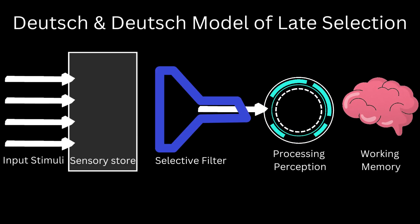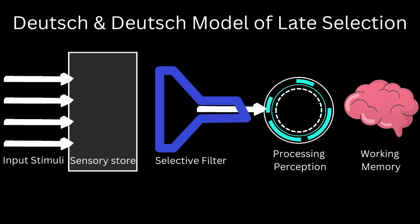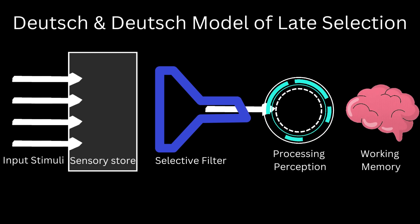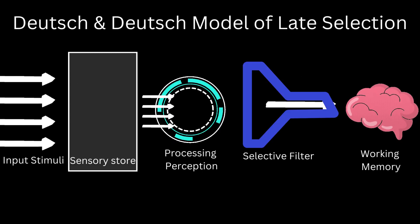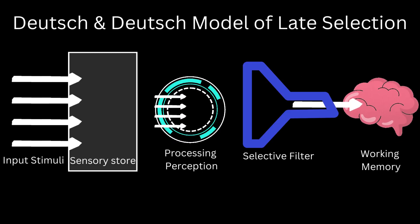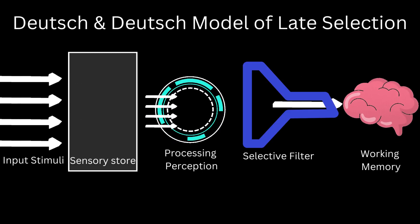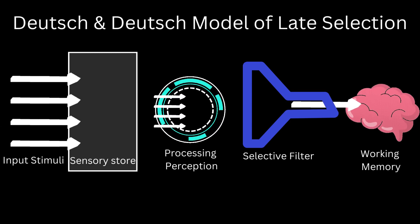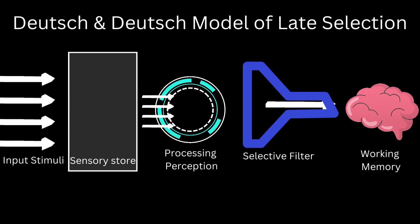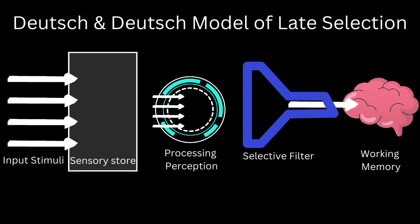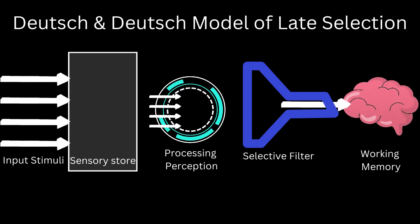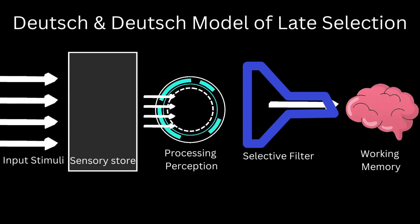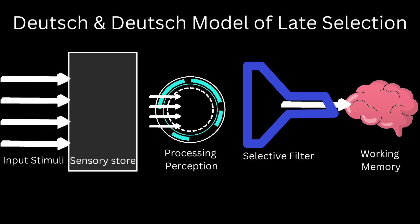The late selection theory shifts the selection filter one step ahead. According to this theory, all external stimuli will be perceived by us, and then we use our selective filter to decide what actually needs attention.